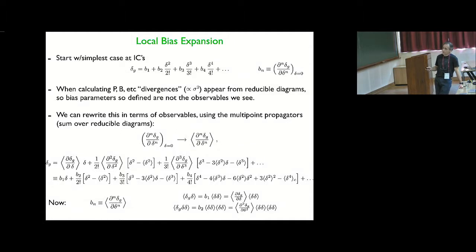there are divergences that appear which are proportional to the variance of the density field. So these parameters that you see here are not the observables that you measure. So another way of writing this expansion, which is in terms of observables,